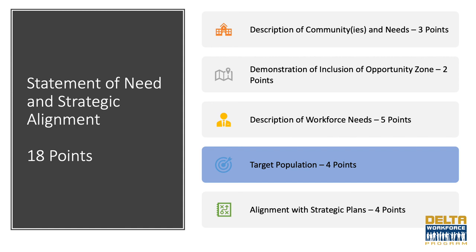Element four, describing the target population, is worth four points. For full points to be awarded, the applicant must identify the population their proposed project intends to serve through this grant. This could include new entrants to the workforce, incumbent workers, and dislocated workers. The proposal must also discuss why this population was selected and how the applicant plans to recruit this segment.